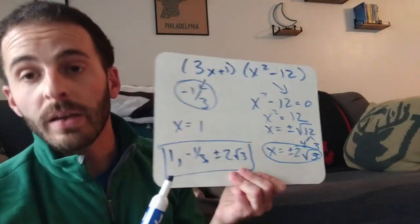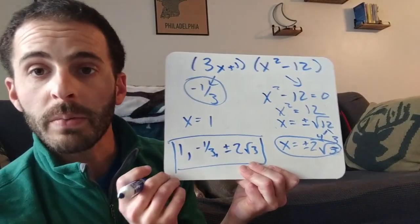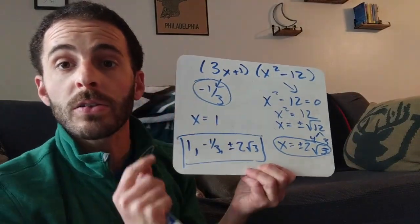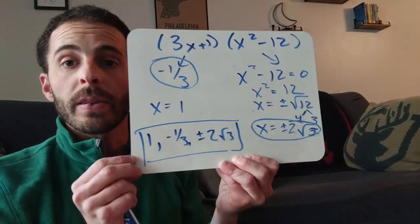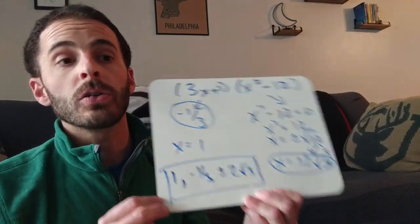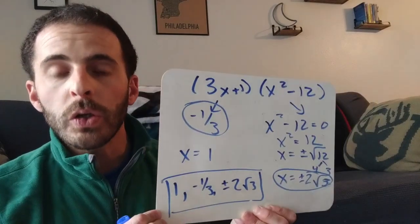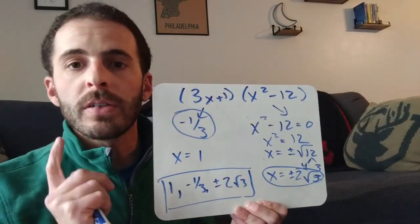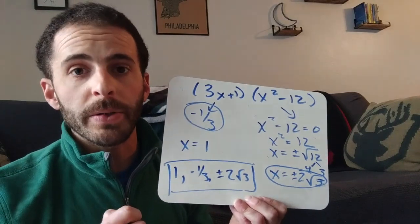And then you make a nice list. Your answer is 1, negative 1 third, and then plus or minus 2 rad 3. 4 answers for a question that has x to the 4th power. So that was everything for number 6. You go back and do number 5. It is going to be easier. Believe in yourself. You can do it. But definitely try it my way using synthetic division and factoring if possible. Alright? Good luck.